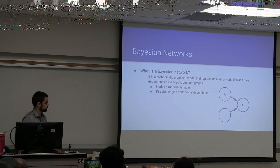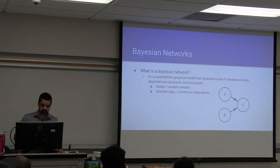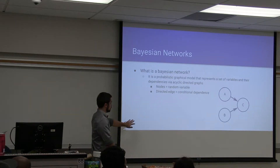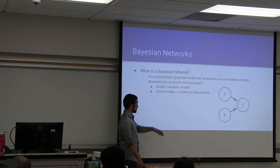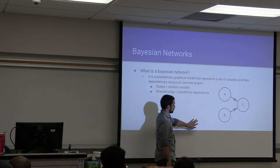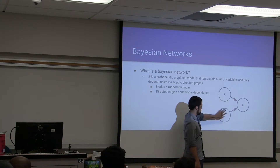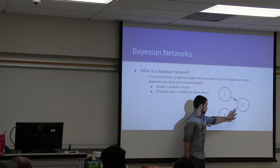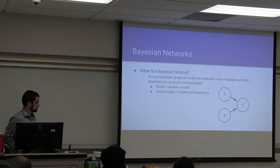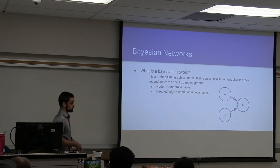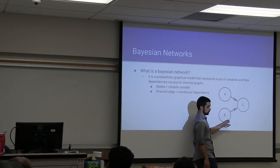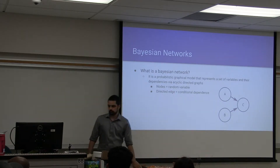So what is a Bayesian network? It's a probabilistic graphical model that represents a set of variables and their dependencies via acyclic directed graphs. The nodes represent the random variables, and the directed edges represent the conditional dependence between two variables. The lack of an edge between A and B means that the value of A does not influence the value of B, and vice versa. But we cannot get the true value of C without first having A and B. Also, the graphs must be acyclic — meaning there are no loops anywhere in the graph. If we had arrows going from A to C, then C to B, then B to A, that would be a loop and would not work for a Bayesian network.